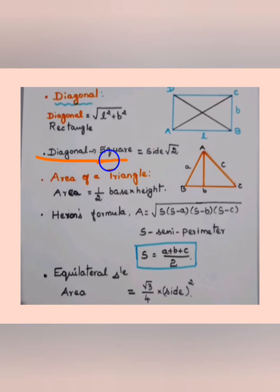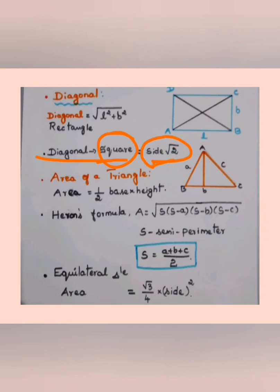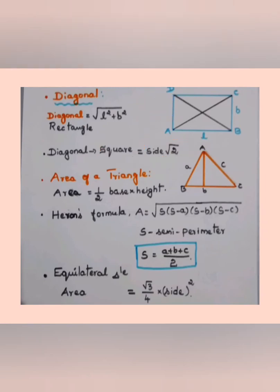For the diagonal of a square, the formula is: diagonal = side × √2. Since all sides of a square are equal, you just multiply the side by √2. For example, if the side is 10 cm, then diagonal = 10 × √2.